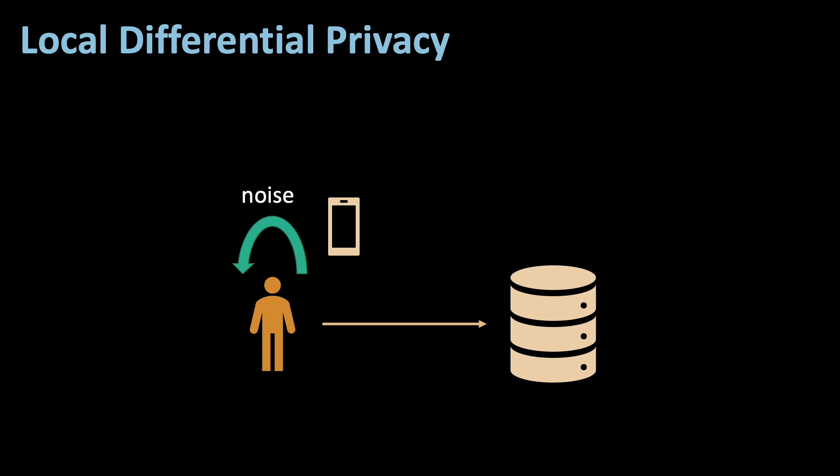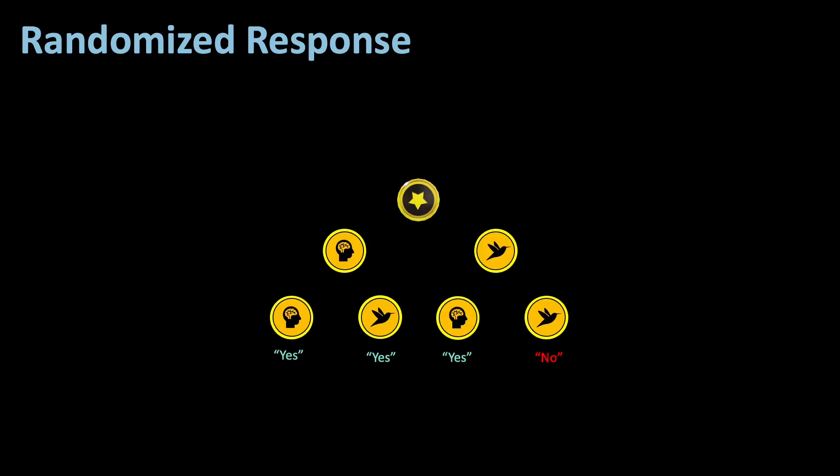It is more privacy-preserving than central DP, which is also called global DP. Randomized response is a way to achieve local differential privacy, but only works for binary variables, usually yes or no questions.